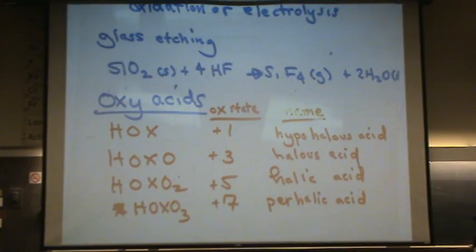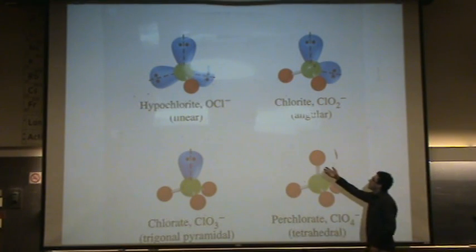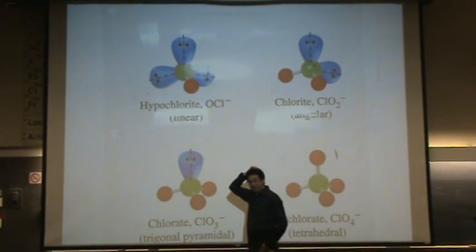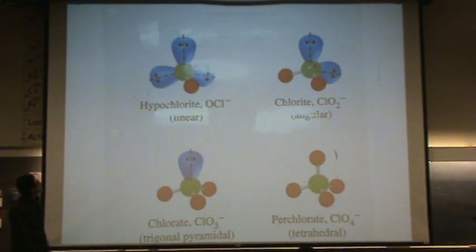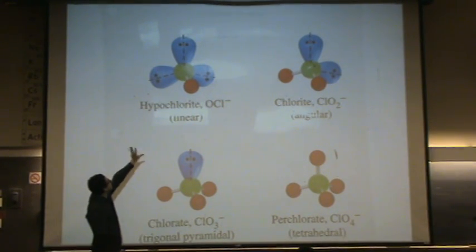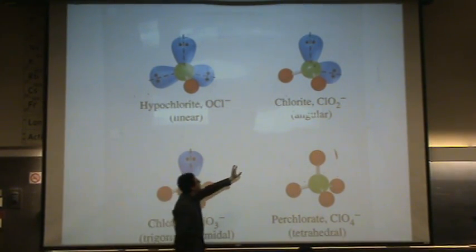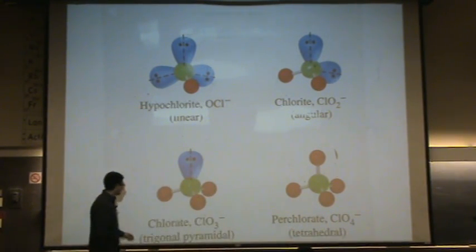Let me show you a picture of these oxyacids. Here are some more shapes for you. You've got hypo, and this is without the, what's it called? Hydrogen. So this is just an anion, polyatomic name. Hypo chlorite, that's linear. It's got three lone pairs. You've got chlorite, CLO2, that's angular.